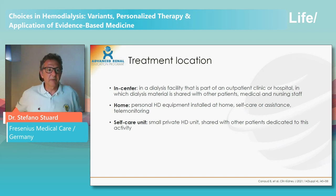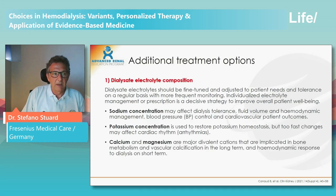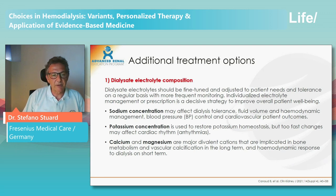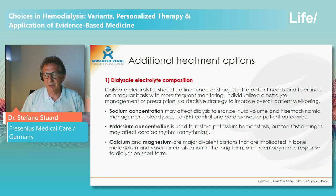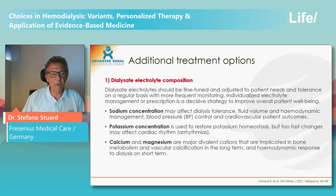Regarding treatment location — whether in-center, home, or a self-care unit — personally I prefer home dialysis. As for additional treatment options, to perform better dialysis we should adjust the dialysate electrolyte composition according to patient characteristics: managing sodium concentration to avoid hypotensive episodes and hemodynamic instability, potassium concentration to avoid too-rapid changes in blood potassium, and calcium and magnesium to avoid complications related to calcium-phosphate metabolism.